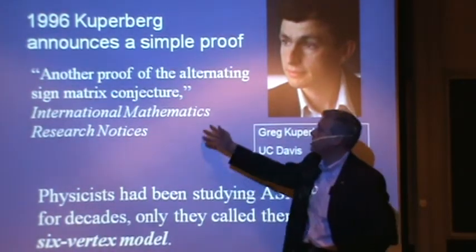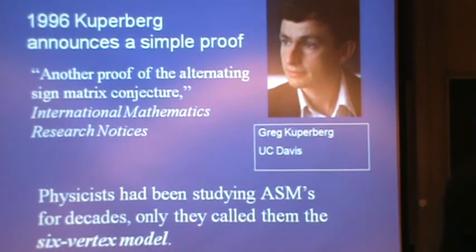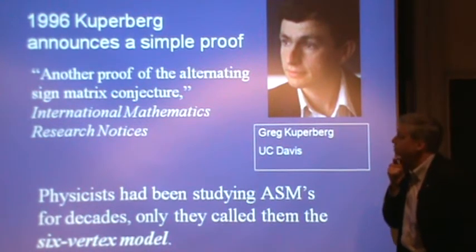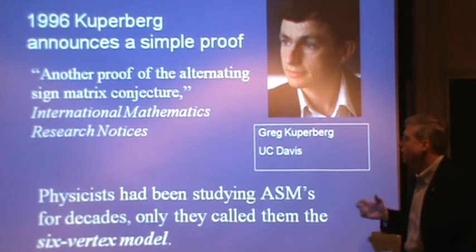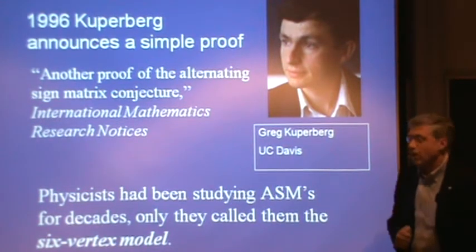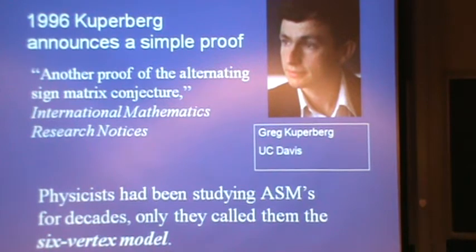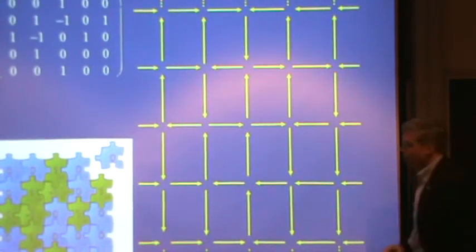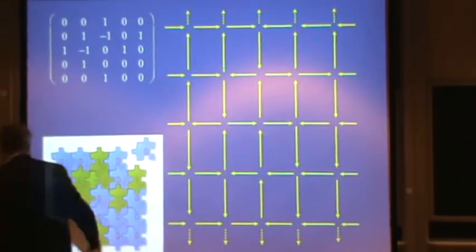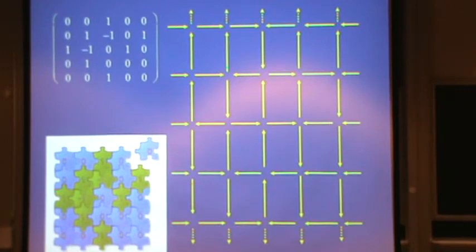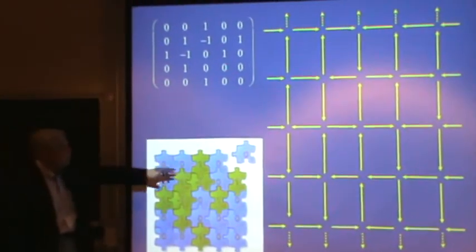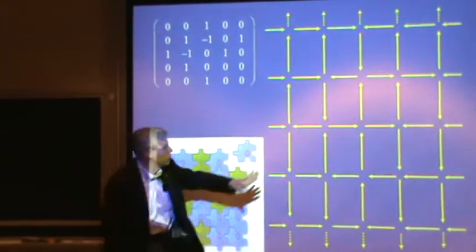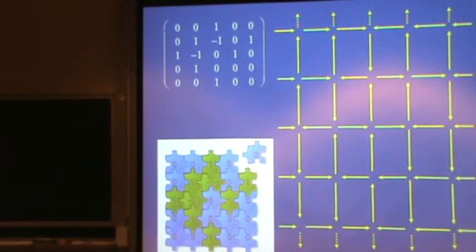One of the important connections that came up also appeared in 1996. This is due to Greg Kuperberg, who announced another proof of the alternating sign matrix conjecture. And what Greg revealed is that physicists actually had been studying alternating sign matrices for decades, only they had called them the six-vertex models. So I want to talk a little bit about the six-vertex model. That's really going back to this representation of an alternating sign matrix as a jigsaw puzzle.